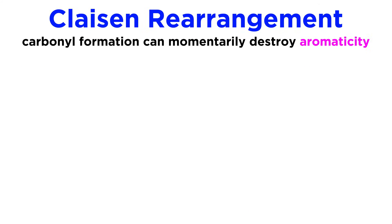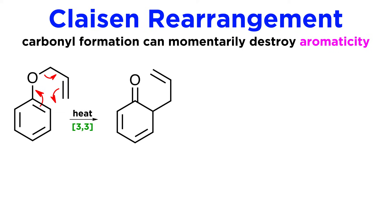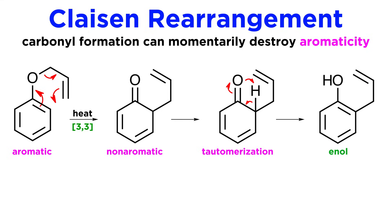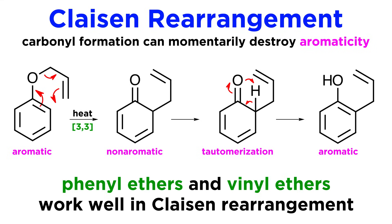The interesting thing about this rearrangement is that the driving force of carbonyl formation is even enough to momentarily destroy aromaticity. Consider this starting material. Upon heating, the 3-3 shift will take place, despite the fact that it requires breaking the aromaticity of this benzene ring. The reason this is possible is that tautomerization can then take place to yield the enol, which is the opposite direction we are used to seeing tautomerization proceed, but in this case it is driven by the fact that enol formation restores aromaticity for the benzene ring. So phenyl ethers and vinyl ethers are great candidates for Claisen rearrangement.